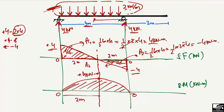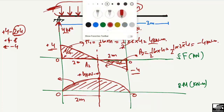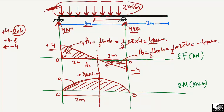It should also be kept in mind that the bending moment diagram should always be one degree greater than the shear force diagram. Here the shear force was a linear line of one degree, so the bending moment diagram is a second-degree curve.